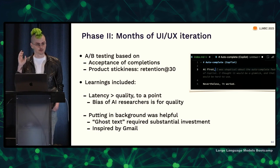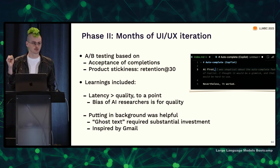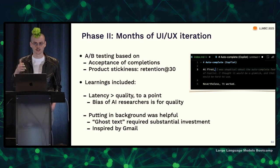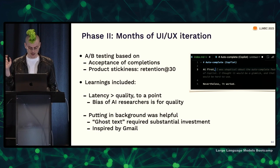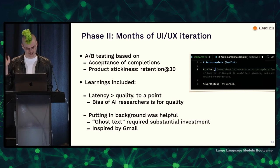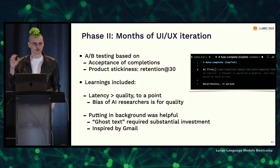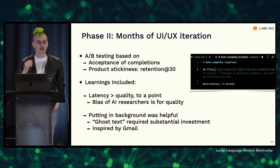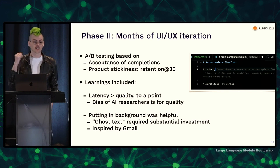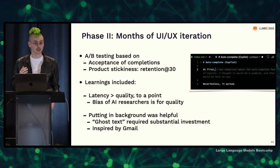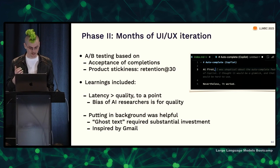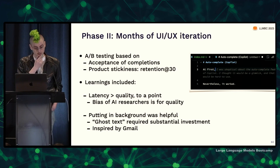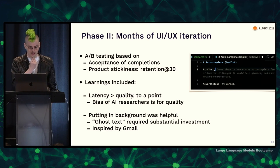One of the big learnings was that latency was really much more important than quality. I'm emphasizing this because the bias of people who come from AI and ML research is towards quality — we benchmark on quality, fight over state-of-the-art, and don't necessarily think about latency implications. But time and again, when people do user research on these things, latency is critical. There are famous measurements from Amazon about how even tiny delays in webpage loading reduce sales. Latency turns out to be pretty critical.